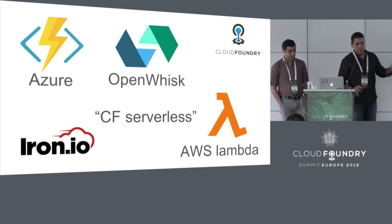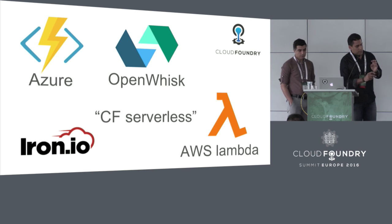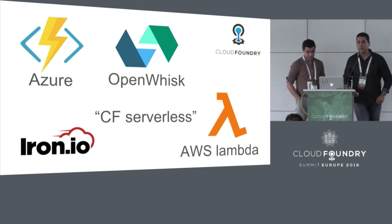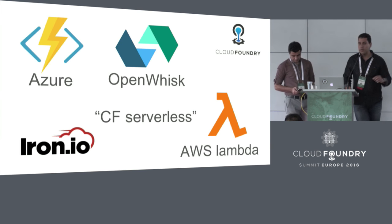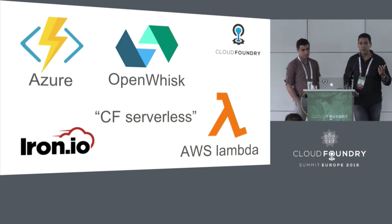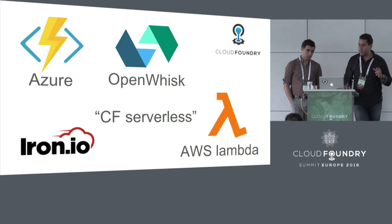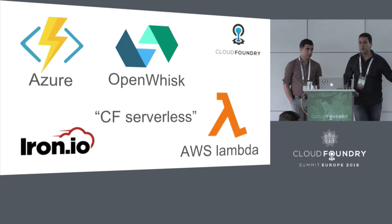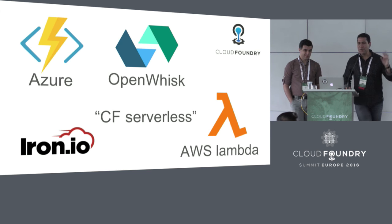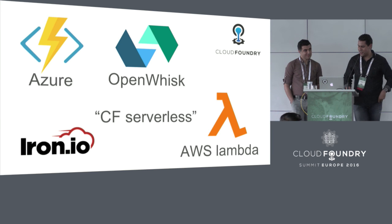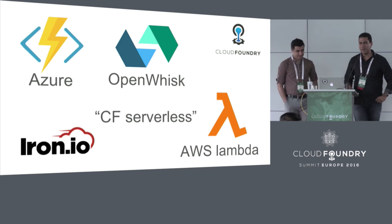The first thing I want to mention is that we've looked at all of these environments: Azure, which is the Microsoft functions, currently in beta; OpenWISC, which is our solution, also in beta; Lambda, which is the only one that's public right now; Iron I.O., not fully beta but certainly part of it; and CF Serverless, something that a couple of people at Pivotal hacked up.